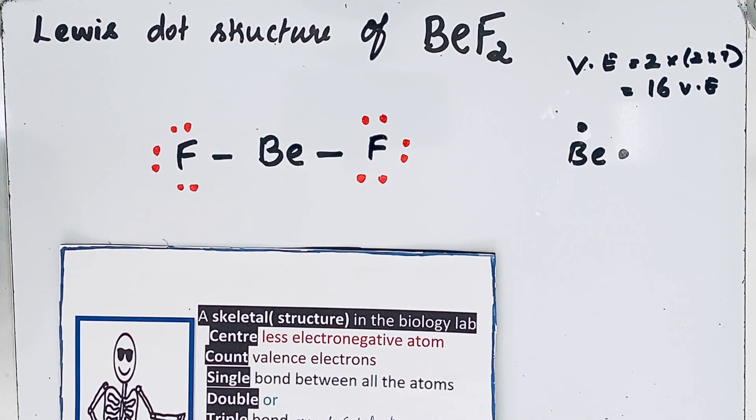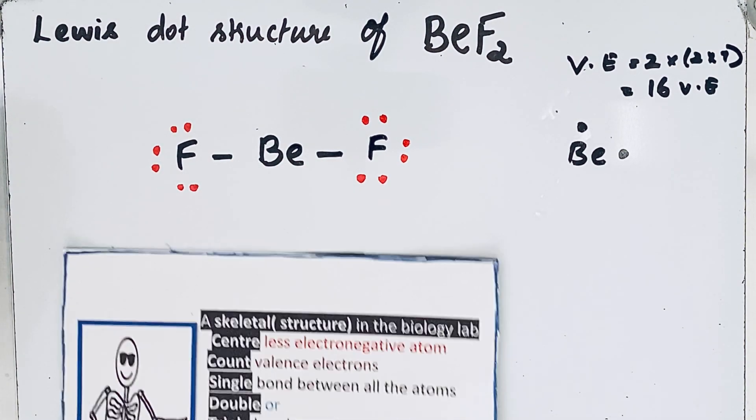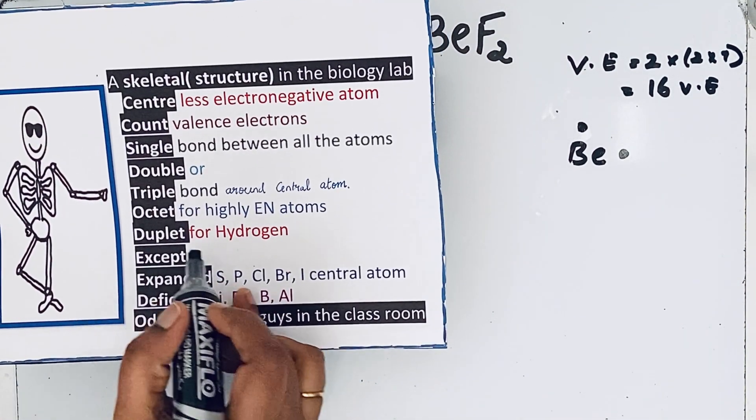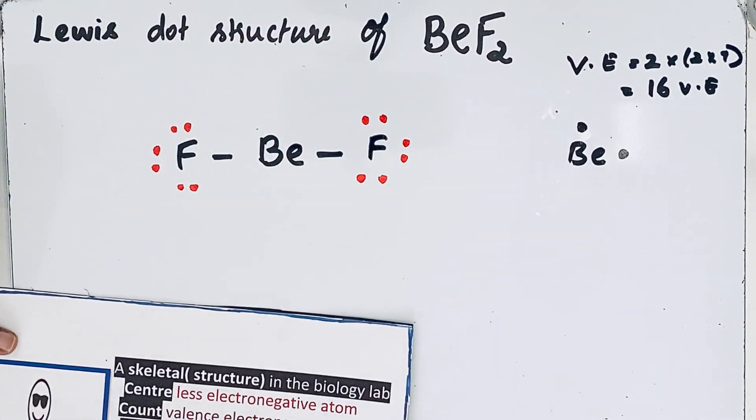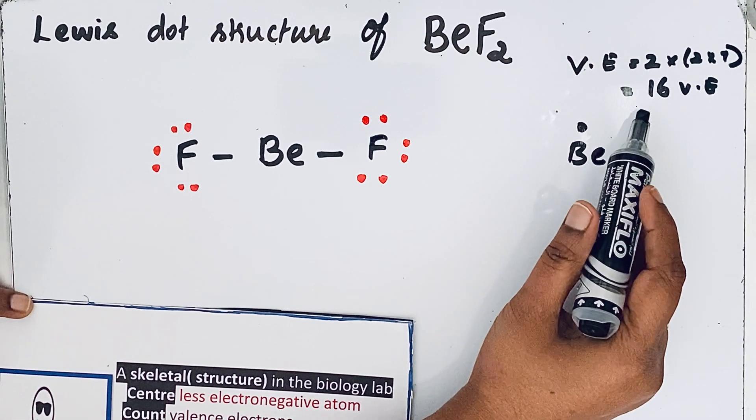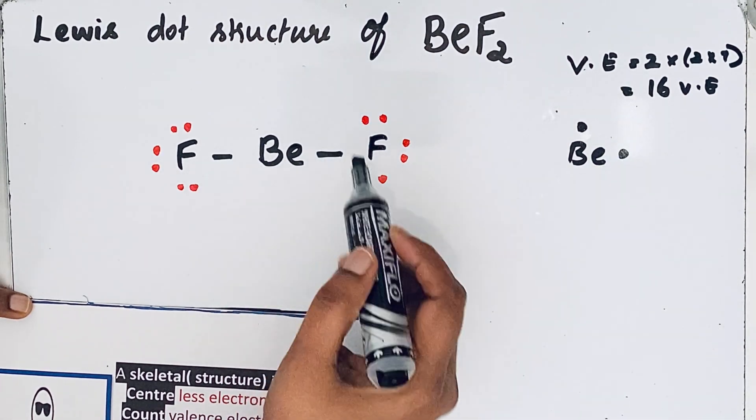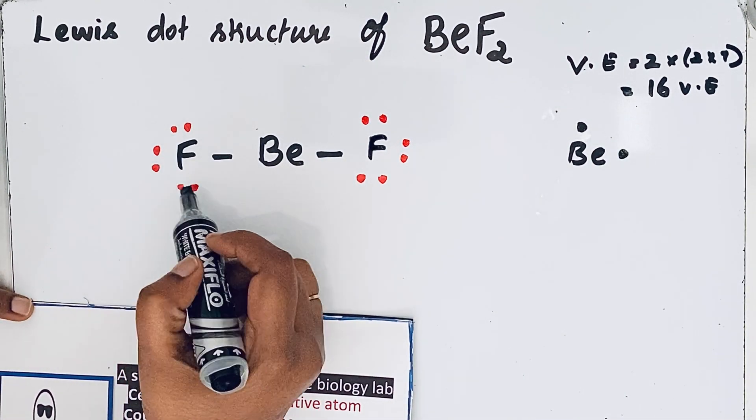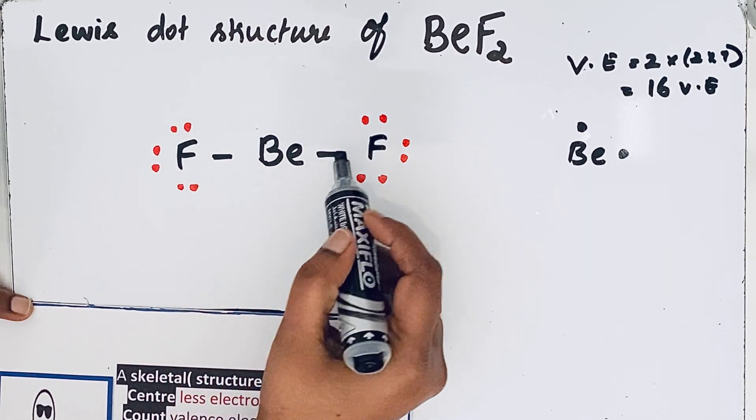Now come to the next step: duplet for hydrogen. Anyhow, we don't have that hydrogen atom here, so we go to check that 16 valence electrons are present in this Lewis dot structure: 2, 4, 6, 8, 10, 12, 14, 16.